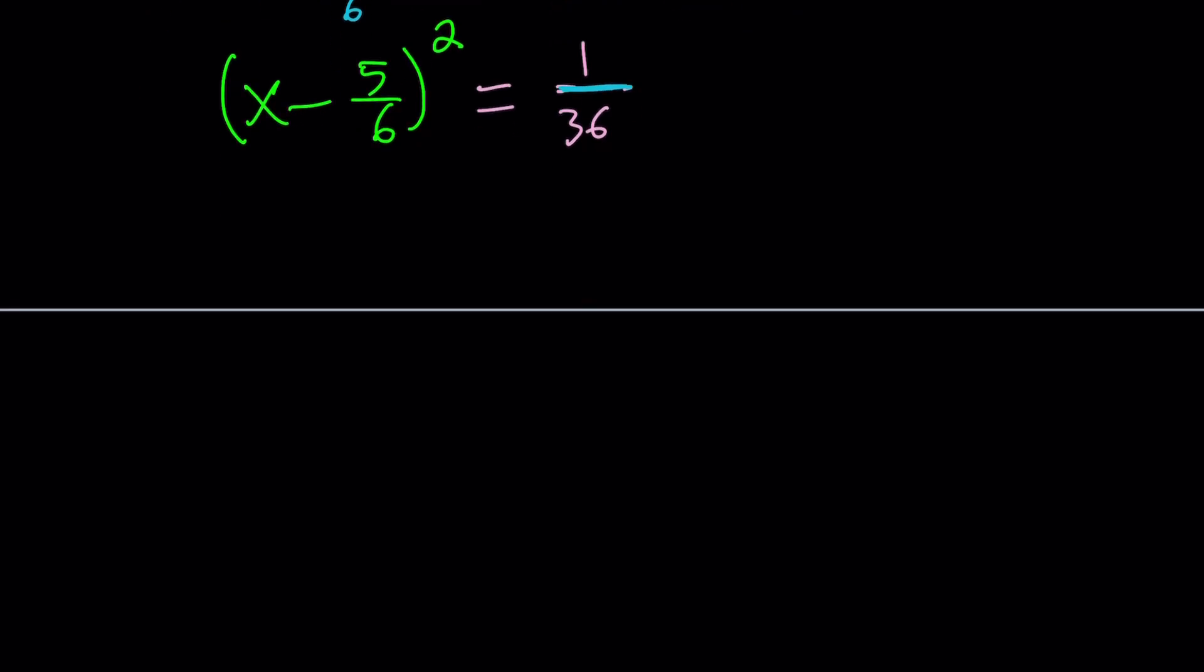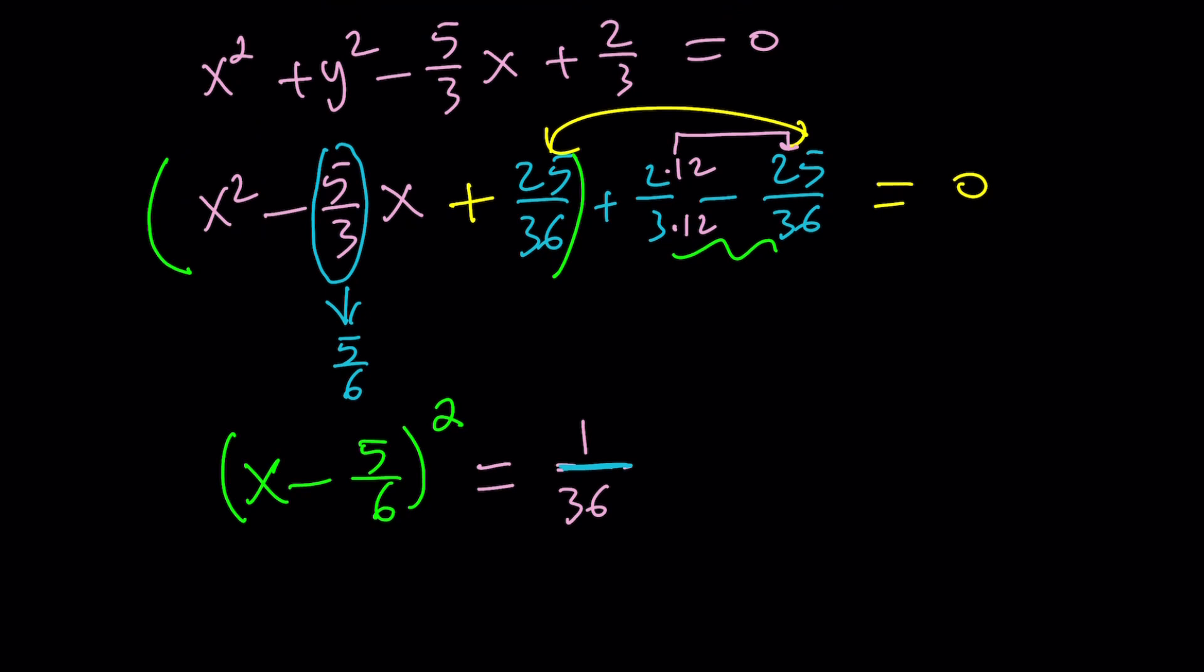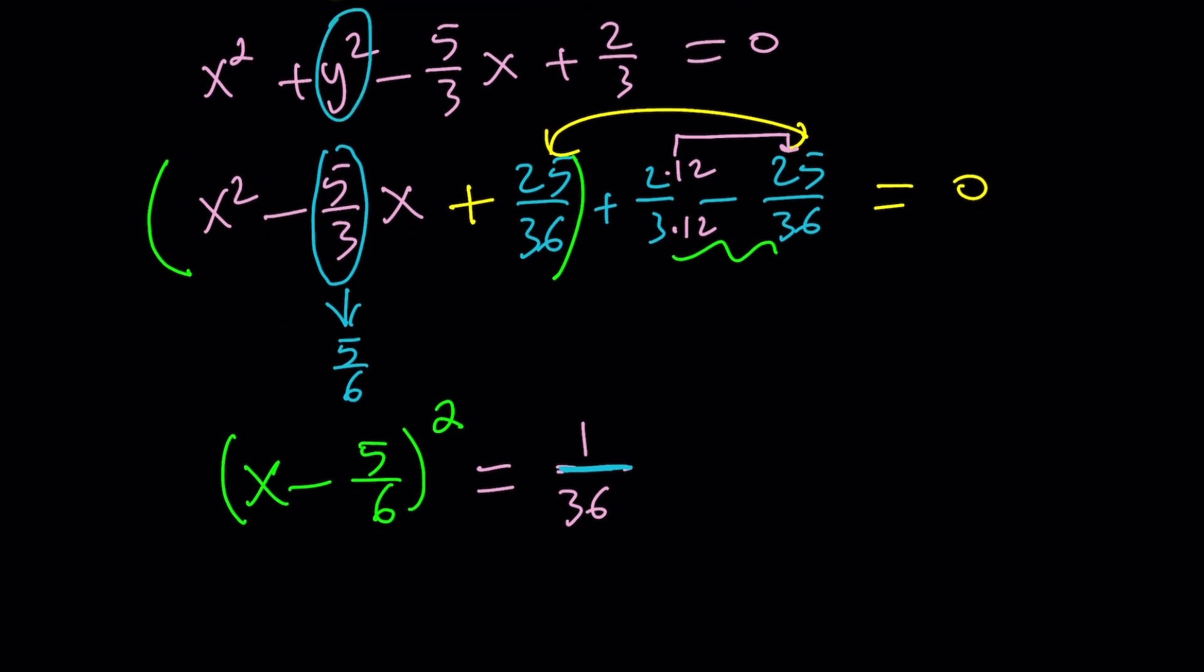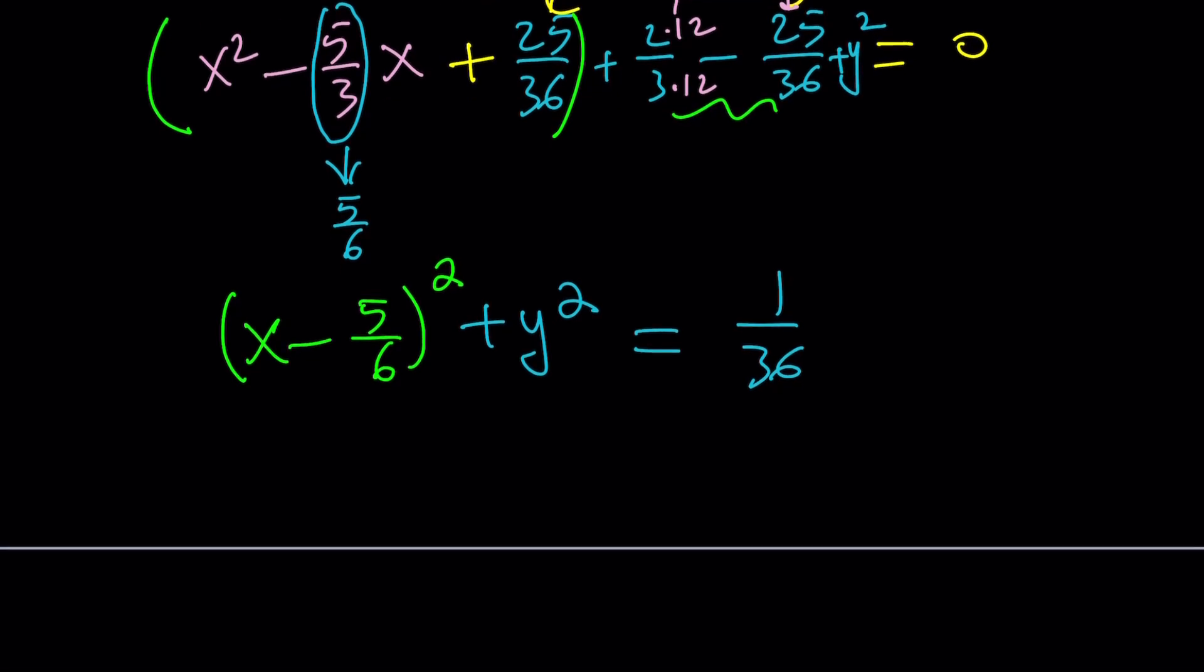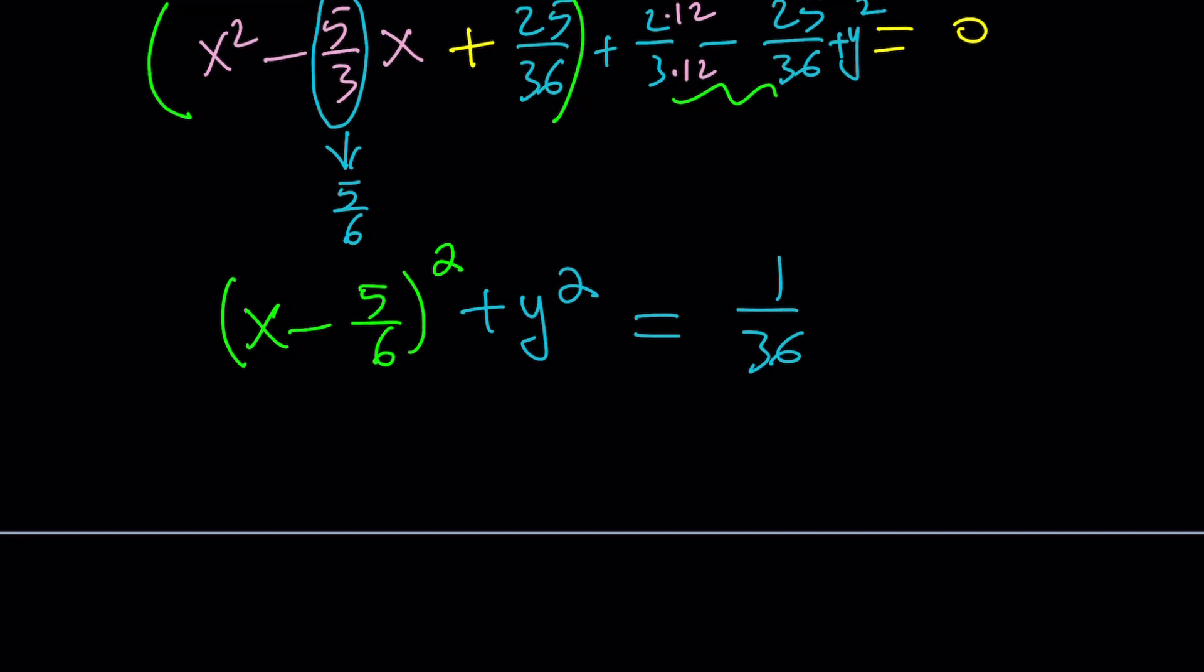Now, here's what we have. We have perfect square equals a number. Oops, I forgot to add the Y squared, obviously, along the process. Plus Y squared equals 1 over 36. So we got ourselves a nice equation. Now, take a look at this expression. Does that remind you (X minus H) squared plus (Y minus K) squared equals R squared? If it does, then guess what? This is a circle.